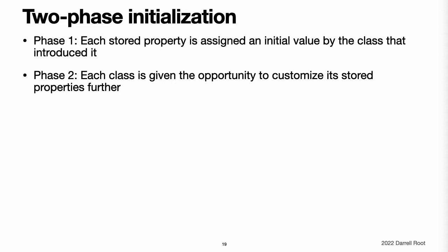The use of a two-phase initialization process makes initialization safe while still giving complete flexibility to each class in a class hierarchy. Two-phase initialization prevents property values from being accessed before they are initialized and prevents property values from being set to a different value by another initializer unexpectedly. Note: Swift's two-phase initialization process is similar to initialization in Objective-C. The main difference is that during phase one, Objective-C assigns zero or null values to every property, whereas Swift's initialization flow is more flexible in that it lets you set custom initial values and can cope with types for which zero or nil is not a valid default value.